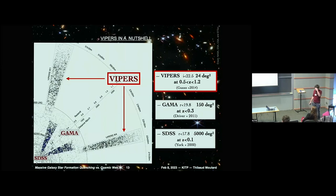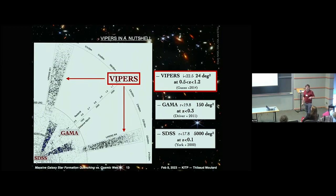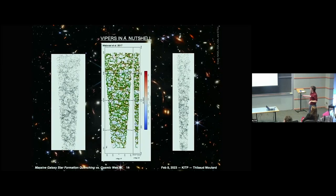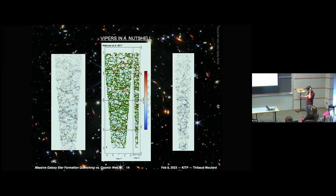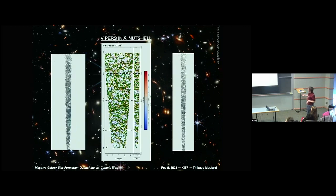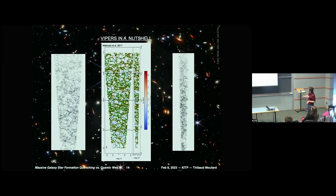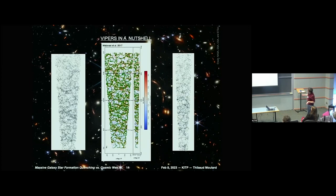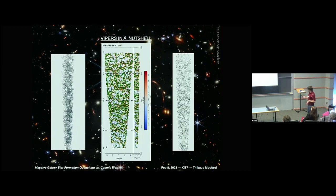I am using the VIPERS survey, which is a quite extensive redshift survey. It covers redshift 0.5 to 1, and I use the 0.5 to 0.8 range because that is where the sampling and the cosmic web reconstruction are best. Here you can see the galaxy distribution and the cosmic web reconstruction with distance to filaments color-coded and the filaments shown in green.